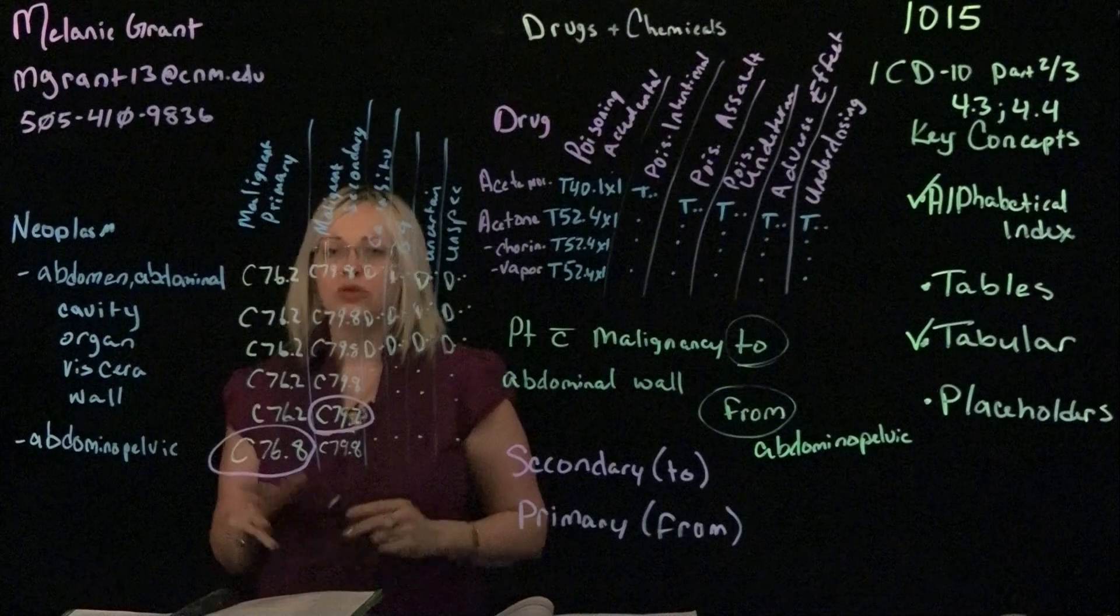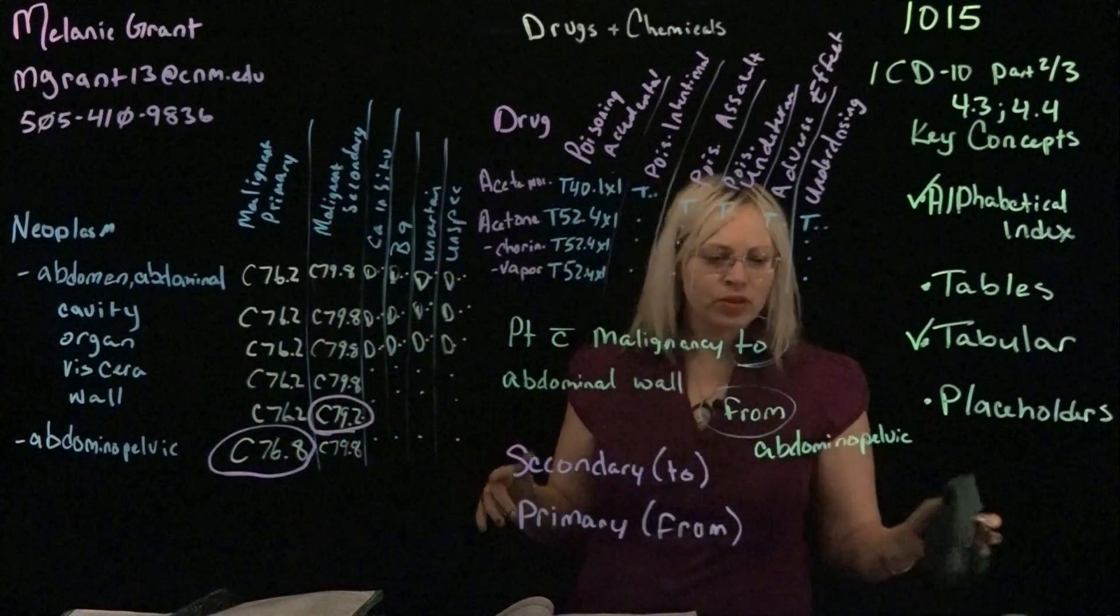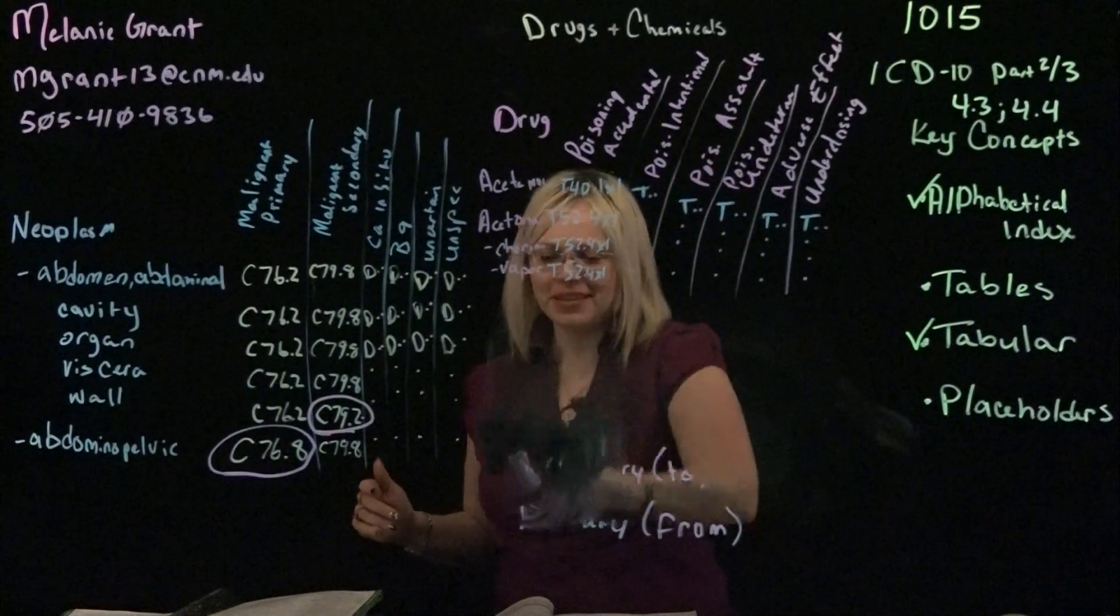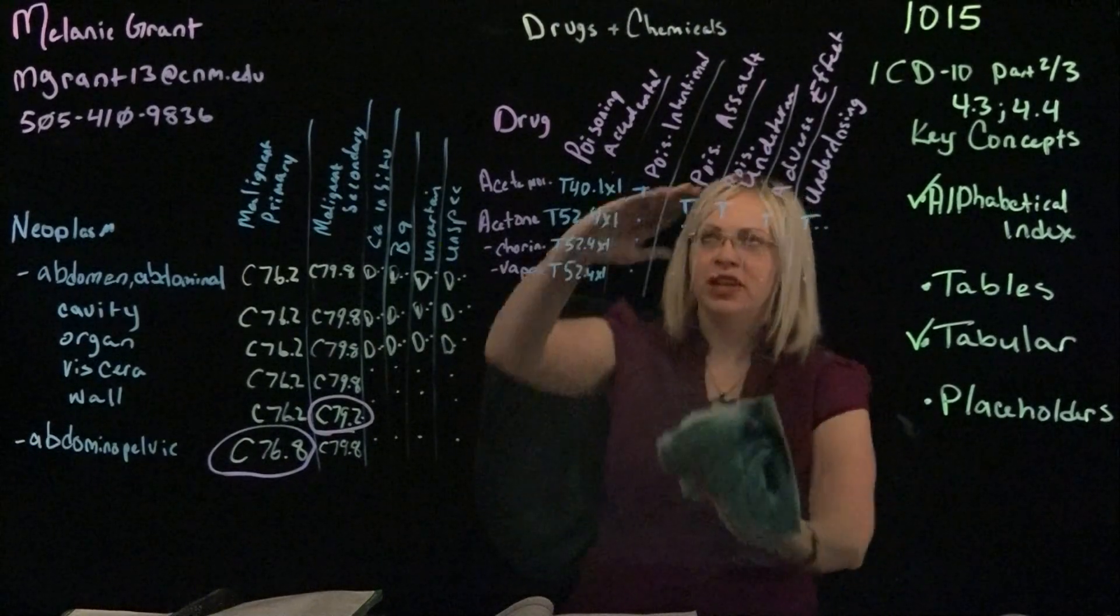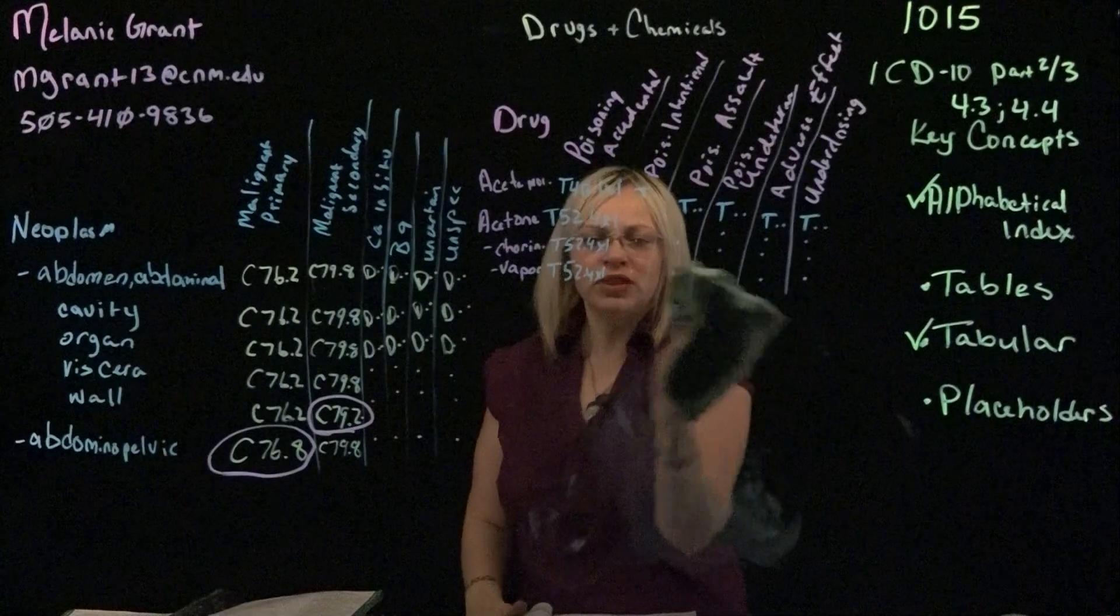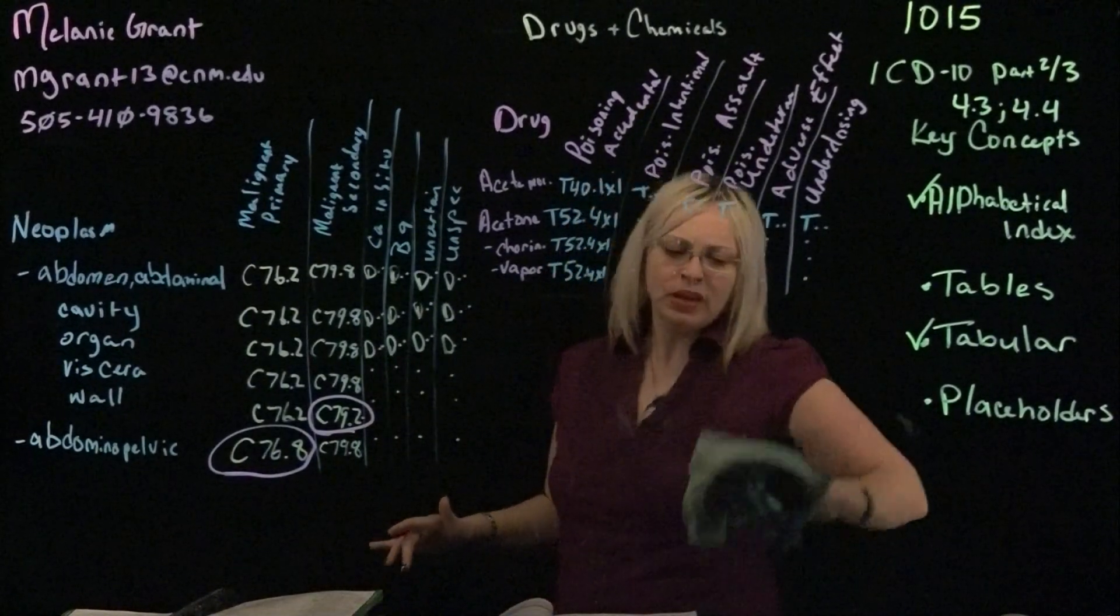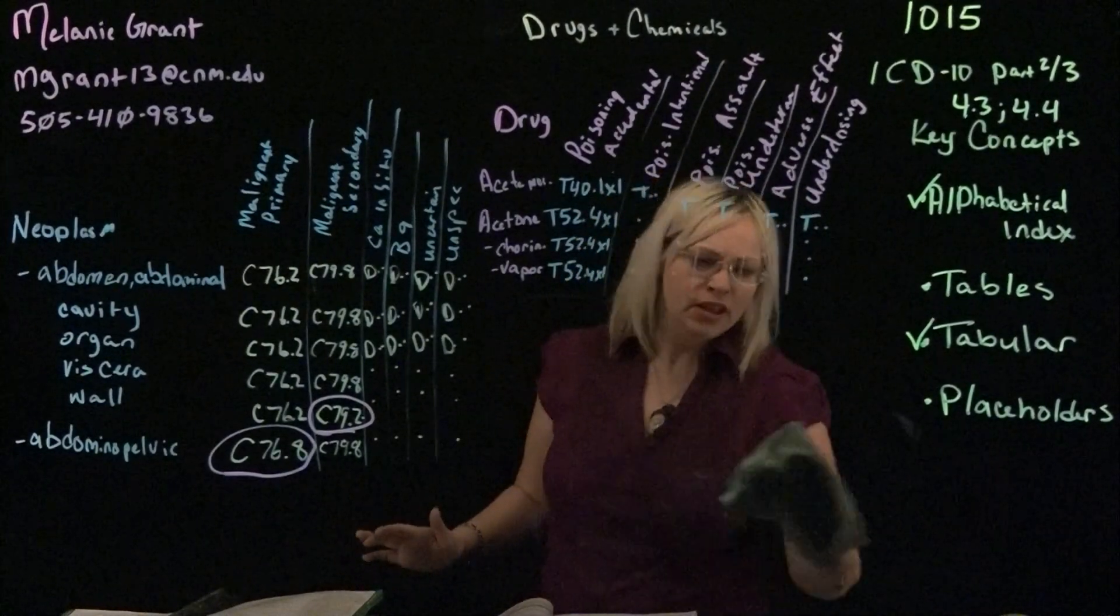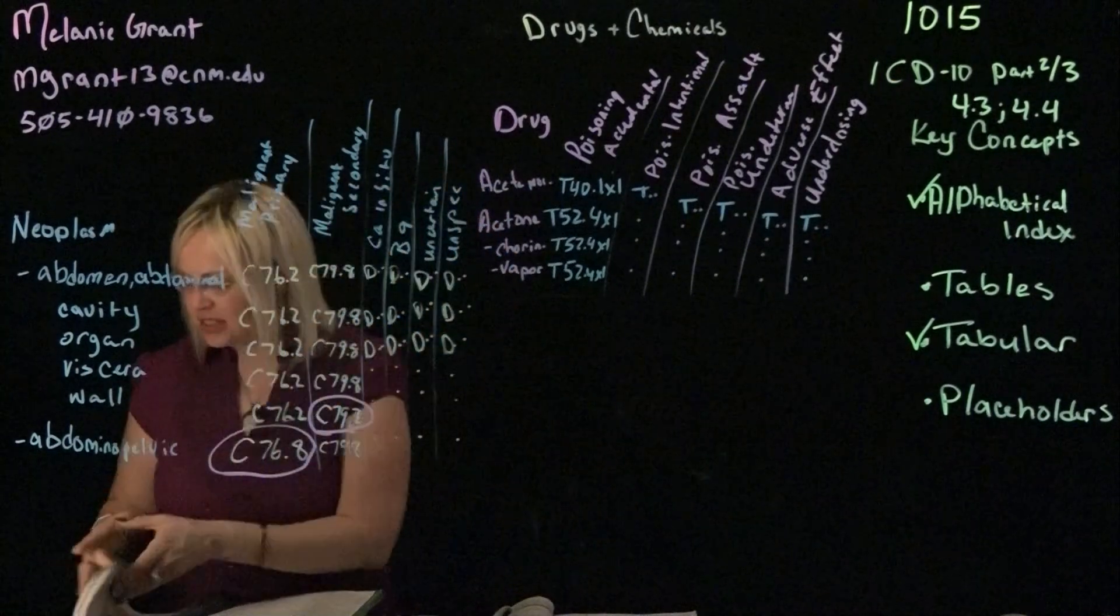Always pay attention, of course, to additional characters that may be necessary. Now, for our second part of this second half of today's lecture, we talk about drugs and chemicals table. And so that's this example that I have here above. The drugs and chemical table is really very similar to the neoplasm table. It's found at the end of the alphabetical after your neoplasm table. So it has its own section as well. It's going to be identified in a table format.